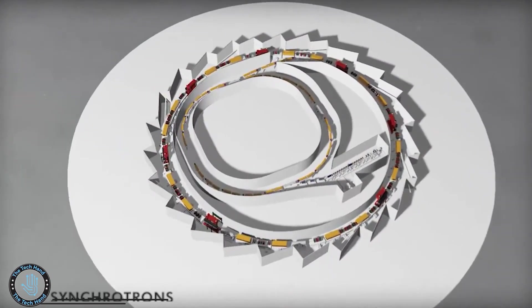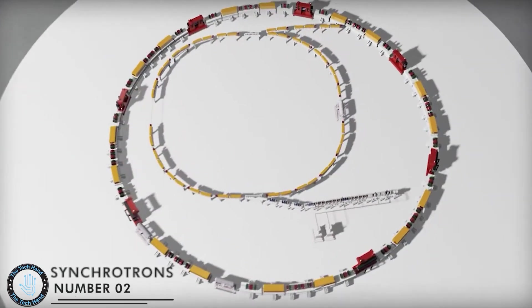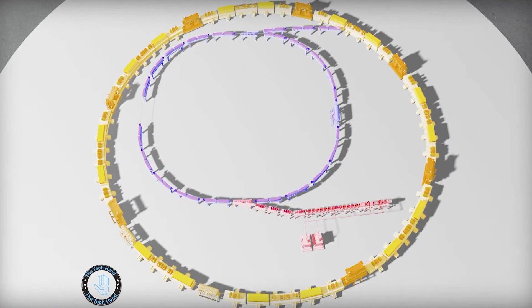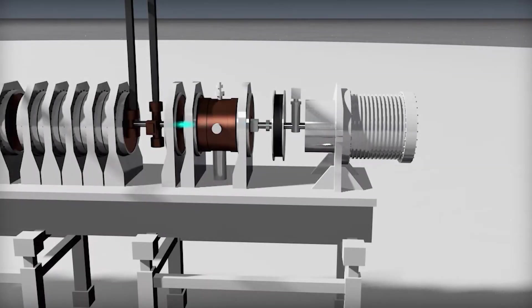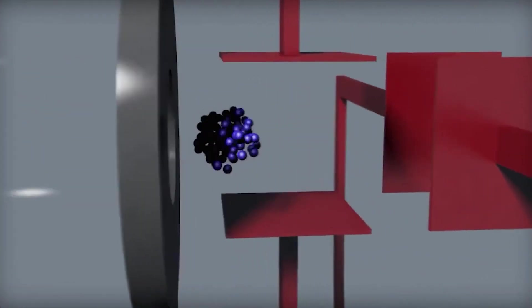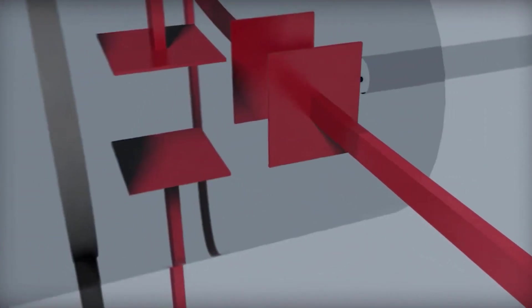Number 2: Synchrotrons. A synchrotron is a type of particle accelerator that uses electromagnetic fields to accelerate charged particles to very high speeds, where they can be used for a variety of scientific and technological applications.